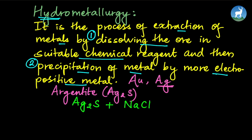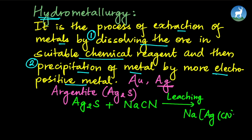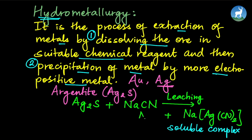For silver extraction, we use sodium cyanide or potassium cyanide in a leaching process. The silver reacts and is converted into a soluble complex: Na[Ag(CN)2], which is sodium dicyanoargentate. The reagent used in this process includes Na2S to help balance the solution.